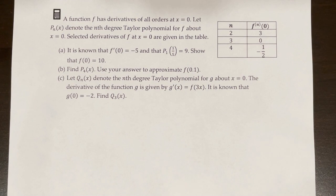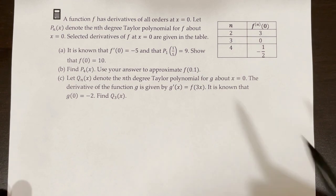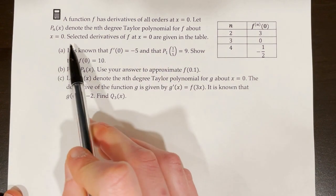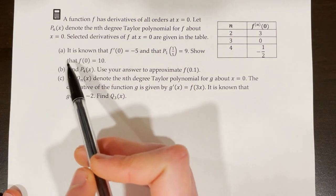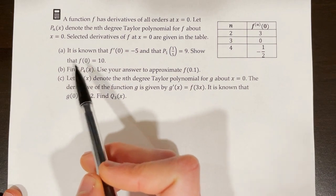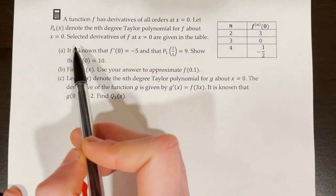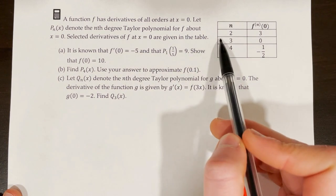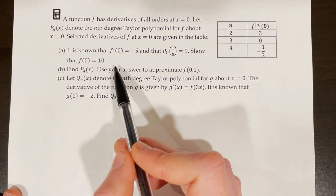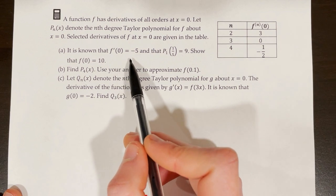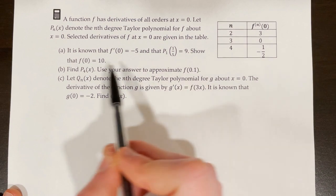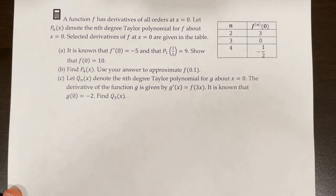A function f has derivatives of all orders at x equals 0. Let p sub n of x denote the nth degree Taylor polynomial for f about x equals 0. Selected derivatives of f at x equals 0 are given in the table. Part a says it is known that f prime of 0 is equal to negative 5, and that p sub 1 of 1 fifth is equal to 9. Show that f of 0 is equal to 10.